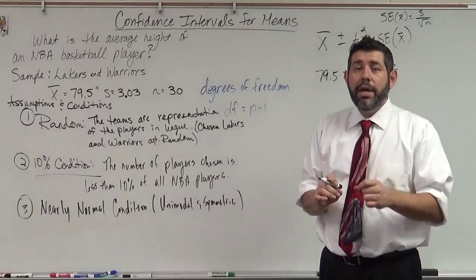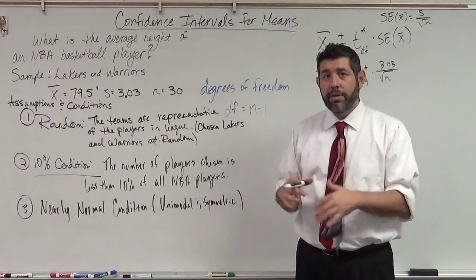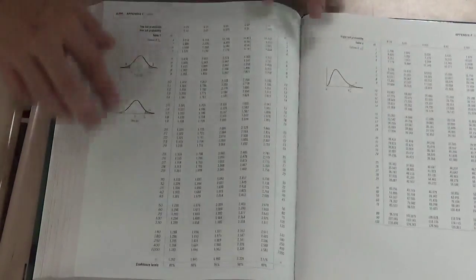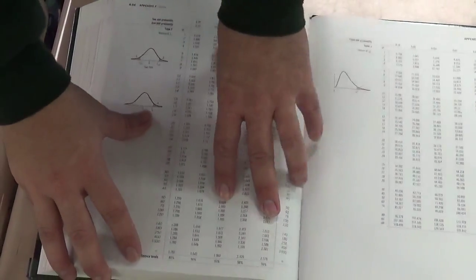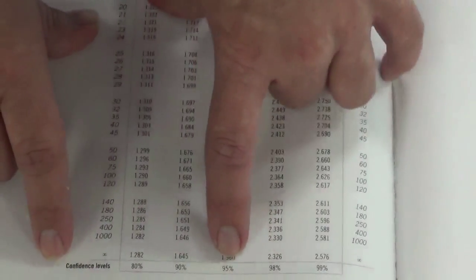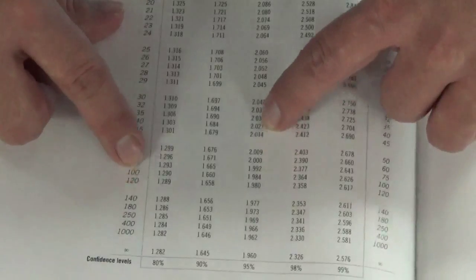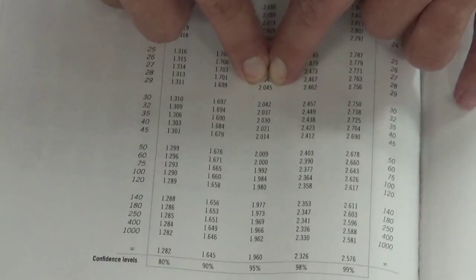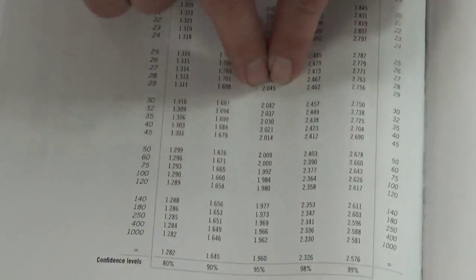We're going to use a table of values to find t-star right now. In another video I'll show you how to find the confidence interval using the TI calculator. This is a t-table — pretty much any stats book has one like this. We go down to the bottom where it says confidence levels. Since we're doing a 95% confidence interval, we go to the 95% confidence column, then go up to our degrees of freedom, which is 29. Where it meets, the value is 2.045. That's our t-star for a 95% confidence interval with 29 degrees of freedom.